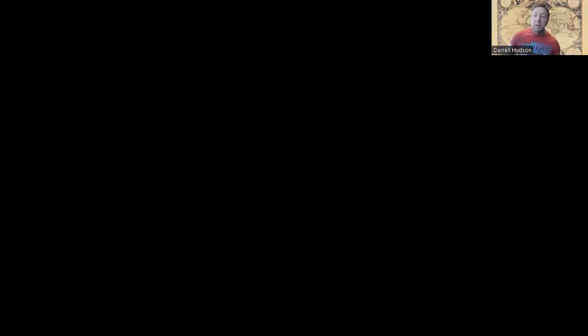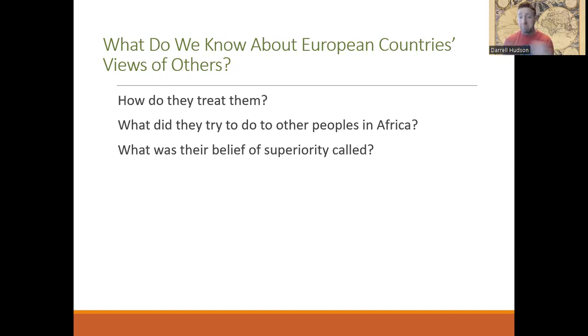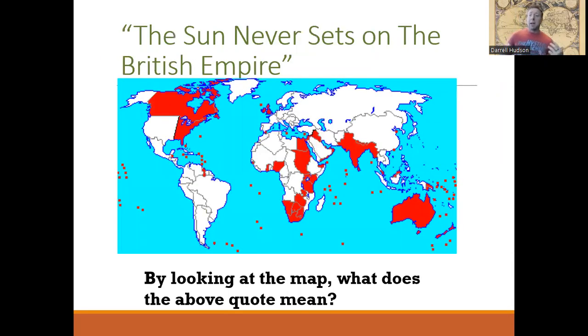Let's talk about imperialism in India and some of the things that happened and why. We know that Europeans had looked at other people in other areas as being somewhat inferior — actually a lot inferior. They go over to the Americas, they think the Aztecs, the Incas, and other groups are inferior. Going into Africa, they feel the Africans are inferior. There's a lot of racism and discrimination going on, and that is going to continue as they go into India.